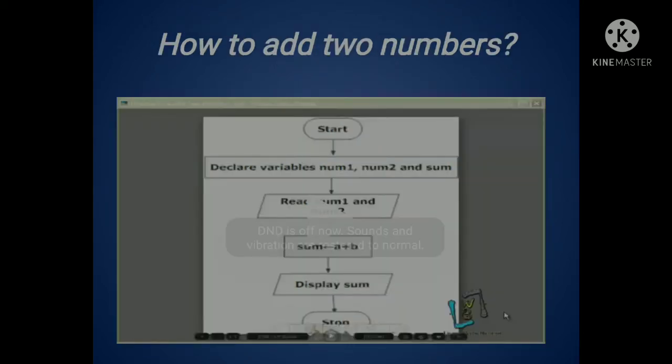Now, see how we will add two numbers. First, we will use the terminal box so that we can start our program. Secondly, we will use our processing box in which we write our first and second number. Now, we will input our numbers 1 and 2 in our input and output box.